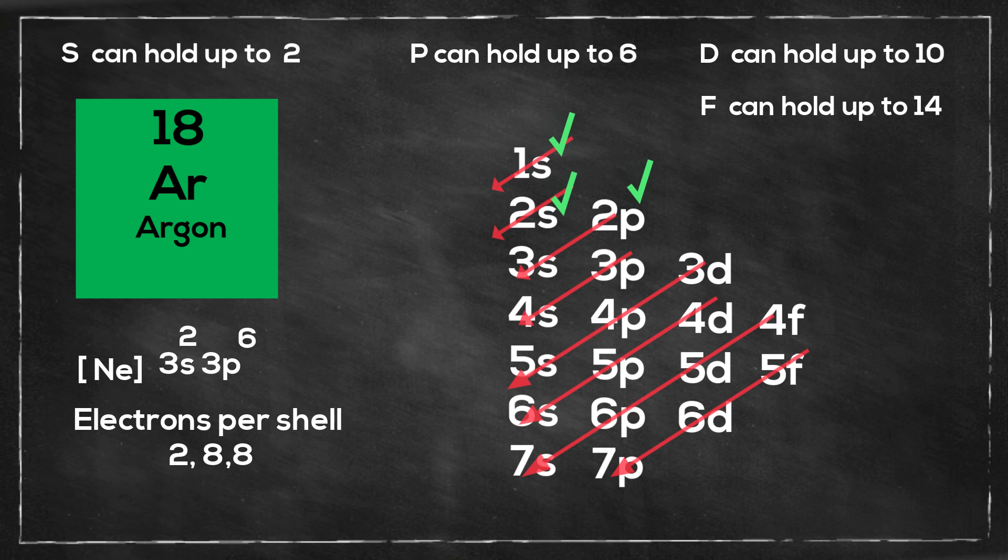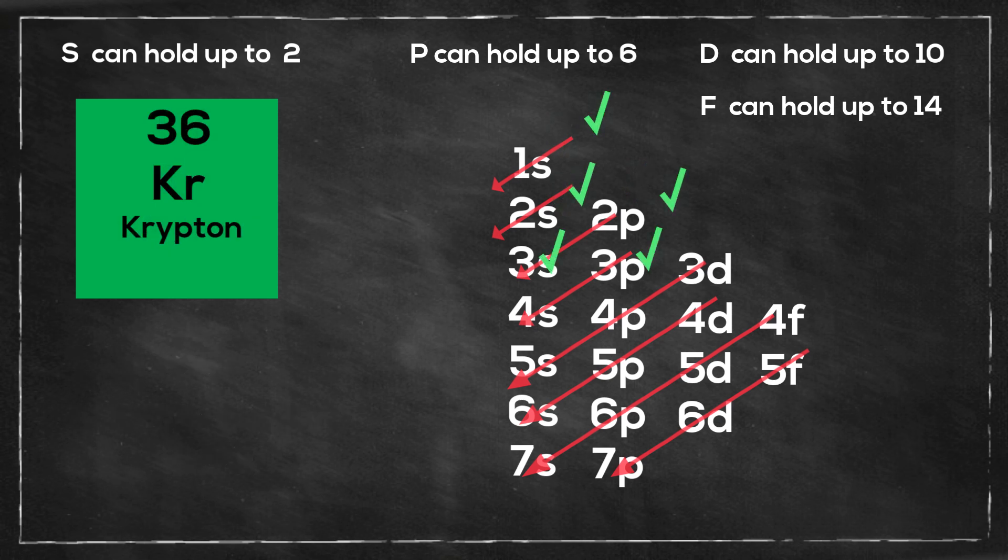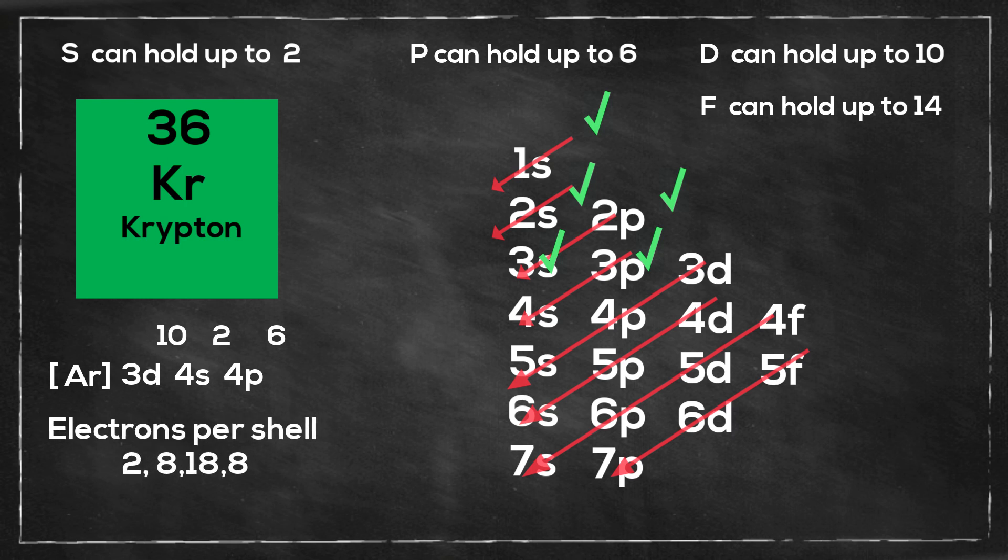Next we have krypton and that is argon plus 3d10 4s2 4p6 and the electrons per shell 2 8 18 8.